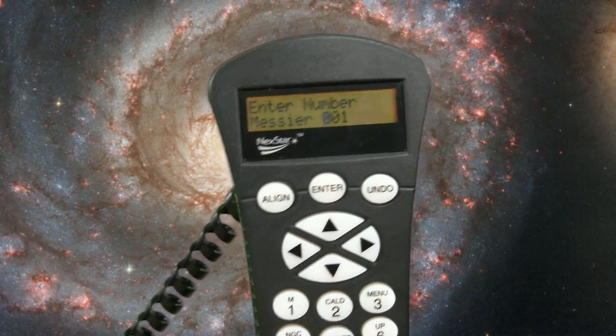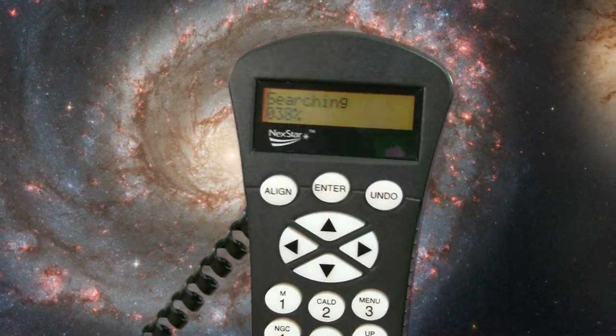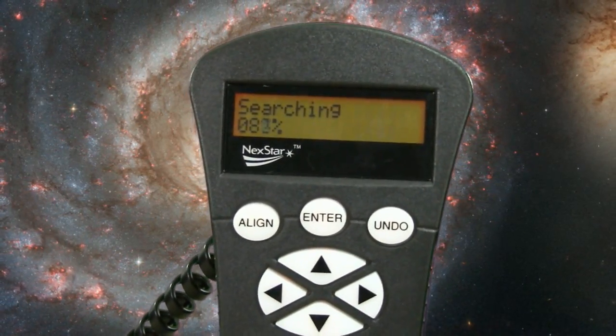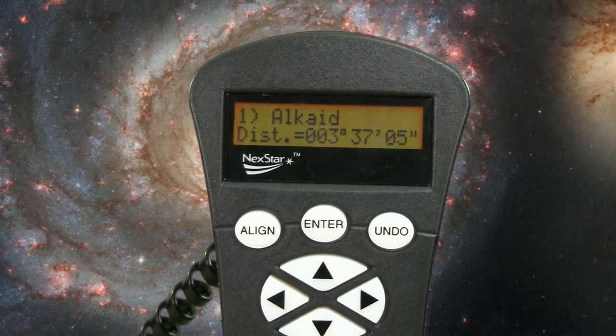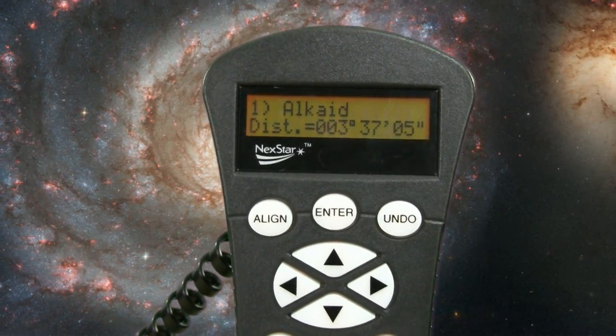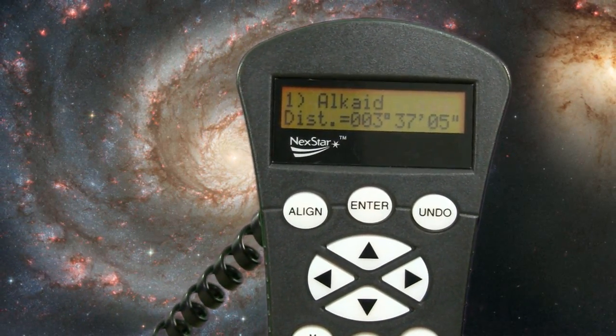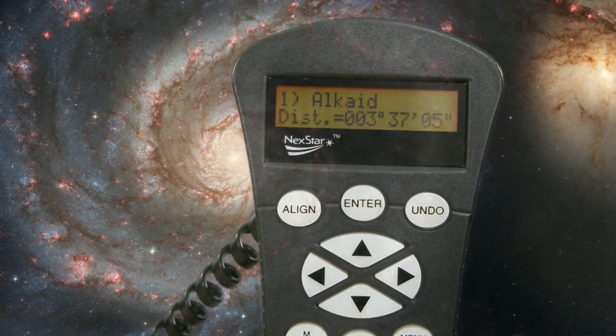Then we type in 051. The hand controller says it's searching. When it's done searching, it gives us a list of five stars sorted by how close they are to M51. Number one on the list is the closest, and it's Alcor. We select Alcor.